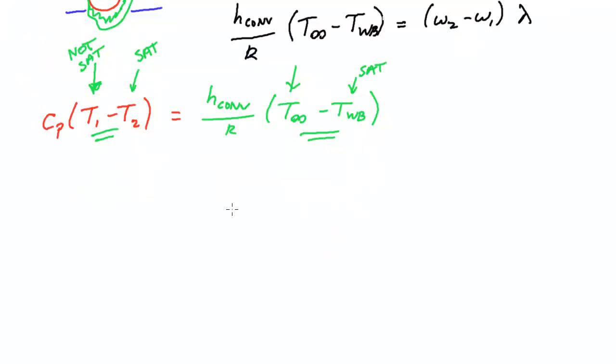And to make that more clear, let me bring this Cp to this side. So these things will be equal if this ratio here is approximately one.